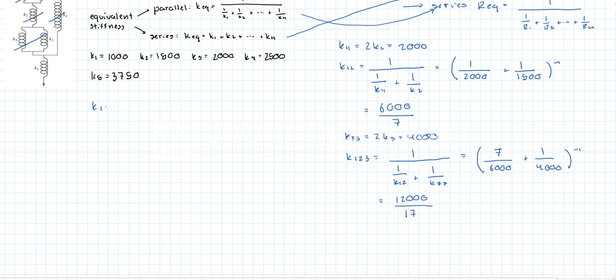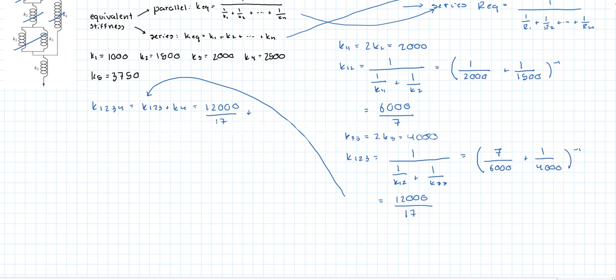Now we find k_1234. That's k_123 plus k_4, and that's going to be 12000/17 plus 2500.